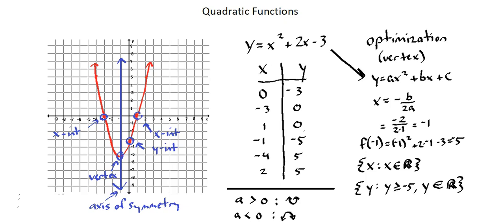And a is never 0, because if a were 0, then we would lose that x to the power of 2 term, and we wouldn't have a quadratic function.